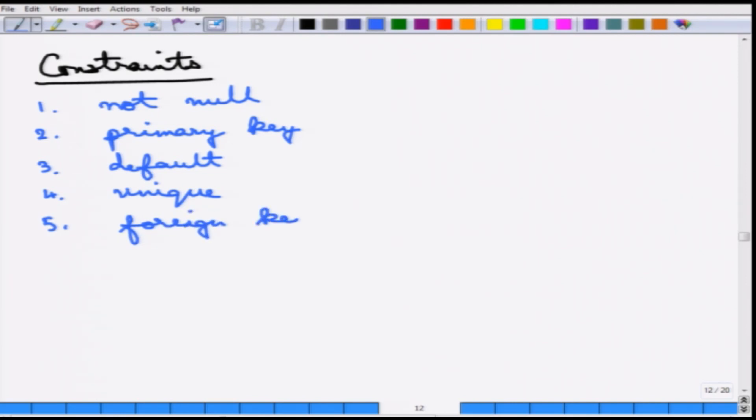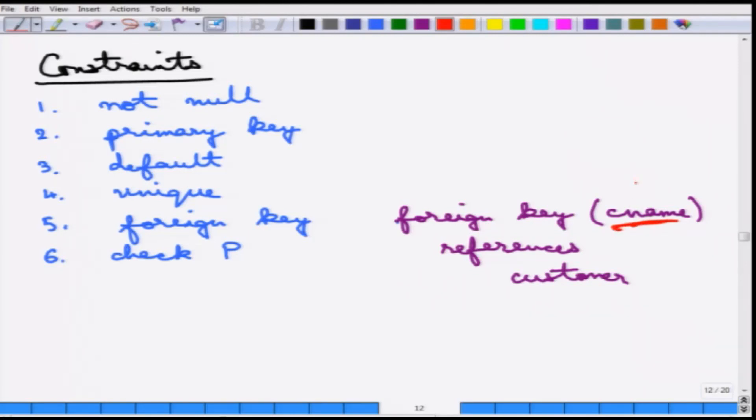The fifth is really very important - it is called a foreign key. You can specify that this attribute is a foreign key to some other attribute. And then you can also say check p, so this is like a domain constraint. You check if the predicate p is satisfied or not. An example of the foreign key constraint is you can say foreign key for a particular thing such as c_name in some table. You can say this references the customer table. If such a definition is inside a table, that means the attribute c_name in this table references the primary key of the customer table.